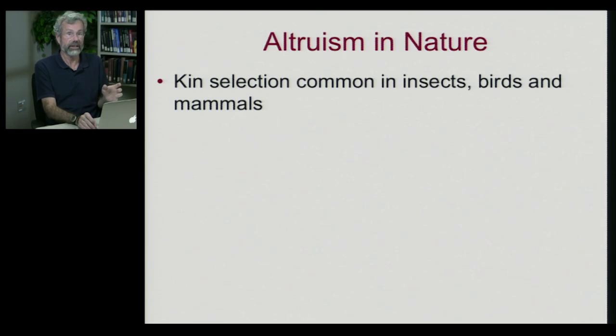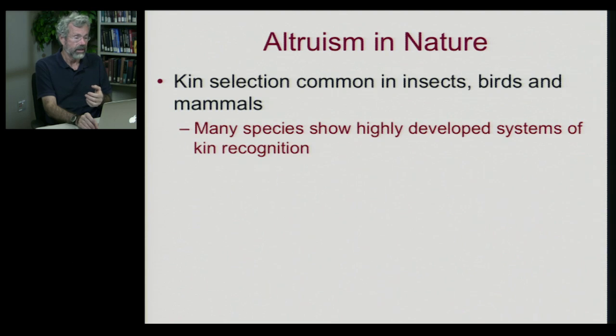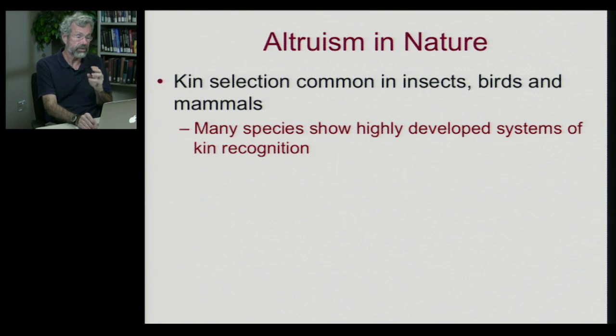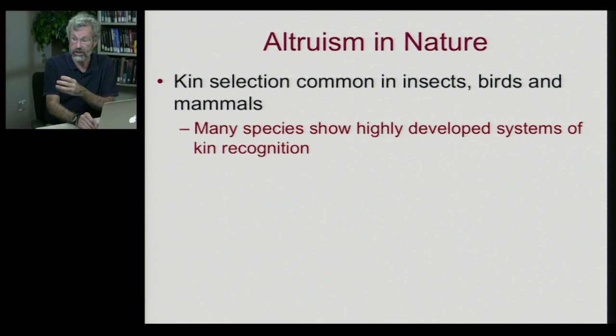Looking at real cases with real organisms in nature, we find that kin selection is very common — it's all over the place in insects, birds, and mammals. Many species are very careful to distinguish their close relatives from others, showing highly developed systems of kin recognition. If I'm helping somebody because they share genes in common with me, I have to be careful only to be nice to those who are indeed my close kin.